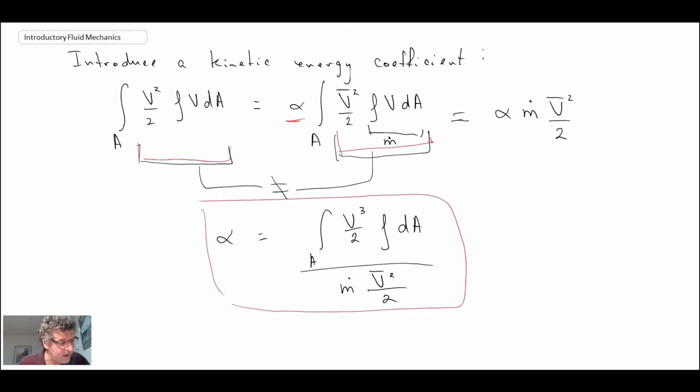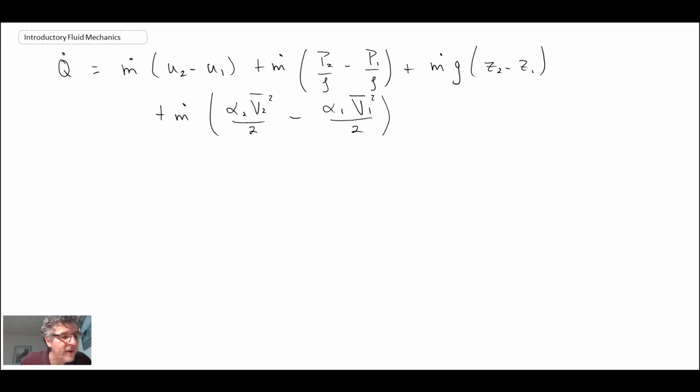That's the definition for this kinetic energy coefficient alpha that we will see in the energy equation when dealing with pipe flow. For laminar flow, it turns out that alpha is 2.0, and for turbulent flow, alpha is approximately equal to 1.0. Consequently, for turbulent flow with alpha being 1, it doesn't really modify the energy equation that much. Let's rewrite the energy equation with this kinetic energy coefficient embedded within it.